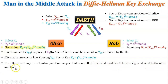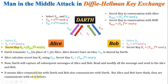Darth now captures all subsequent messages between Alice and Bob, reading and modifying them all. Whenever Alice wants to send a message to Bob, she encrypts it with k2, but Darth captures it, decrypts it using k_Alice, modifies the message, re-encrypts it using k_Bob, and sends it to Bob. Bob receives the modified message, decrypts it with k1, and has no idea the message was modified by Darth. The same process happens in reverse for Bob's replies. Effectively, Alice and Bob are each communicating with Darth, not with each other, without knowing it.